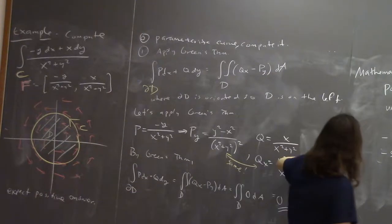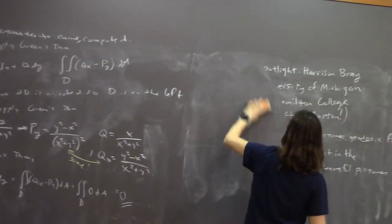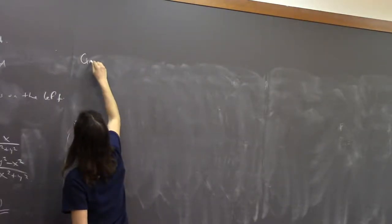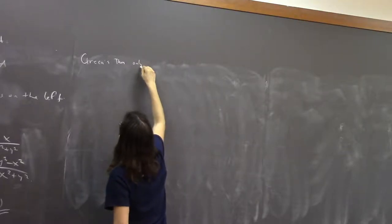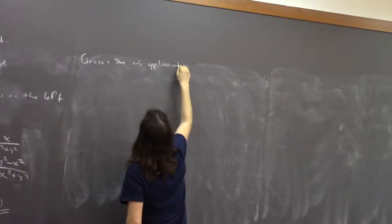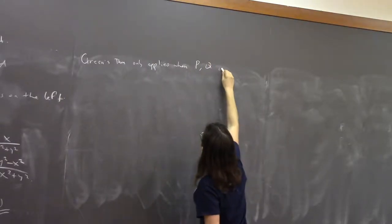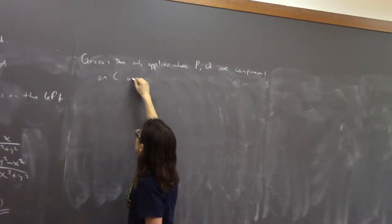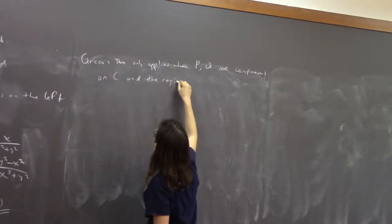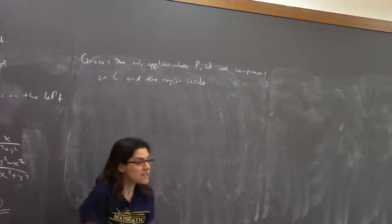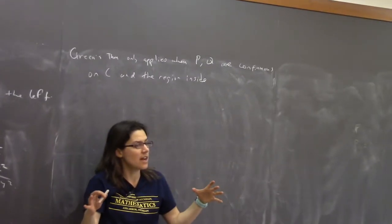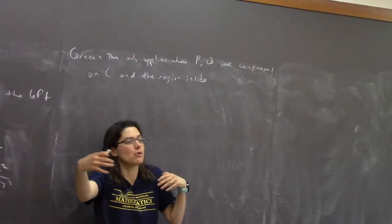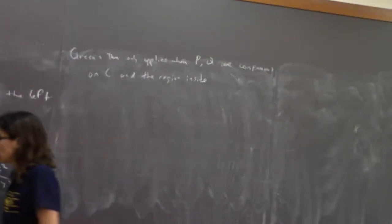Green's theorem only applies when p and q, the components of your vector field, are continuous on your curve C and the region inside. We studied whether a function was continuous as you approach the origin — it's continuous if no matter which way you approach the origin, you get the same value. Let's see what happens here: if I approach the origin from the right, all of my vectors are just pointing up — they're like (0,1). If you approach from the left, all these vectors are pointing down — (0, negative 1).